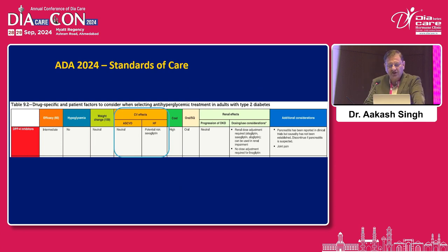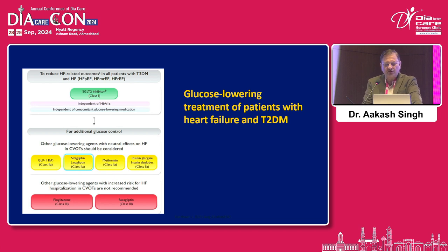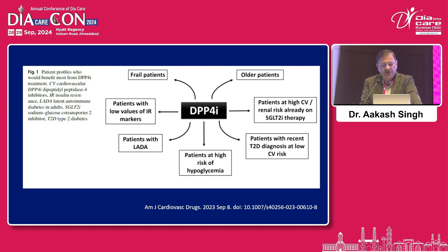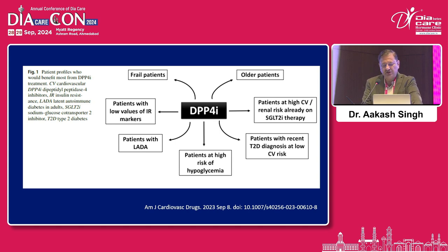The ADA standards of care state that the CV effects are neutral for ASCVD as far as DPP-4 inhibitors are concerned. In heart failure, saxagliptin has a potential risk and should not be used. For glucose-lowering in patients with heart failure and type 2 diabetes, after adding drugs like SGLT-2 inhibitors and GLP-1 receptor agonists, DPP-4 inhibitors can be safely used for additional glucose control. DPP-4 inhibitors can be given to frail patients, those with low insulin resistance markers, LADA, older patients, patients at high CV and renal risk, those already on ASCVD therapy, patients with recently diagnosed type 2 diabetes at low CV risk, and patients at high risk of hypoglycemia.